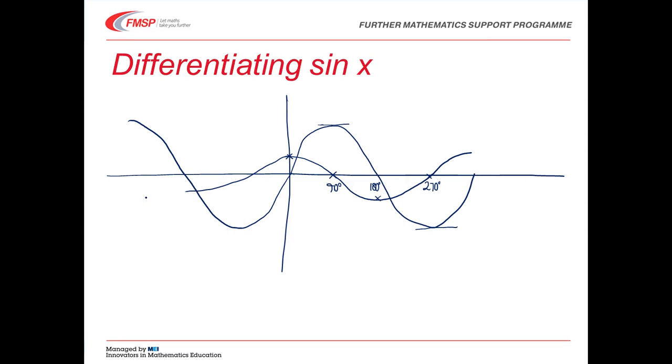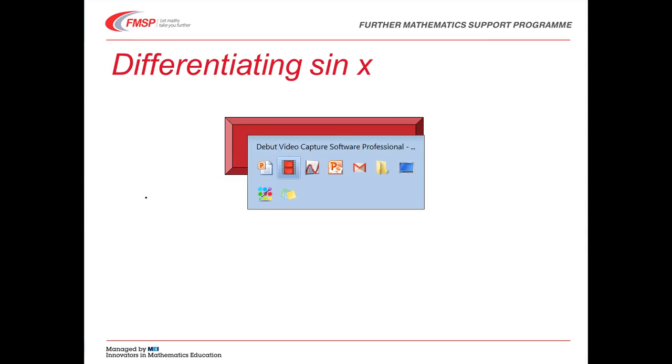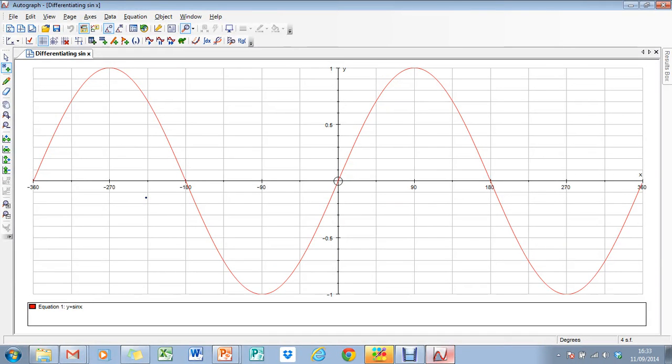Okay, let's have a look at this a little bit more accurately with some graph sketching software. Here's a much better sine curve. Let's plot the gradient curve slowly. You can see that tangent, the blue tangent line moving around. It's reached minus 270 gradients of zero. Decreasing. And then increasing back up to zero. Increasing up to that maximum value. Decreasing back to zero. Decreasing a bit further. Back up to zero. And then back up to the maximum value.